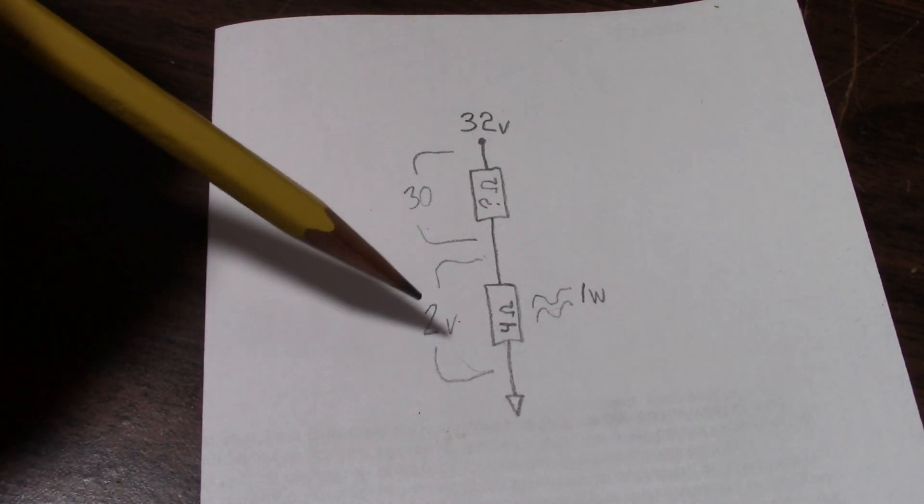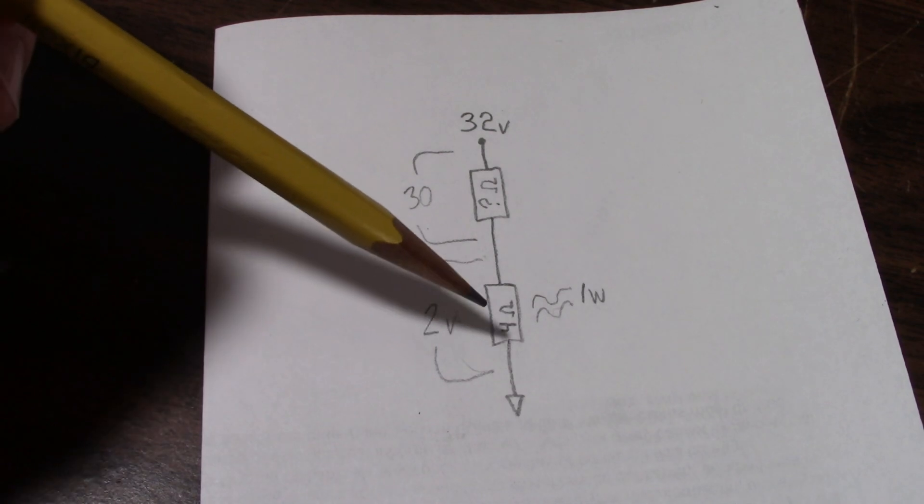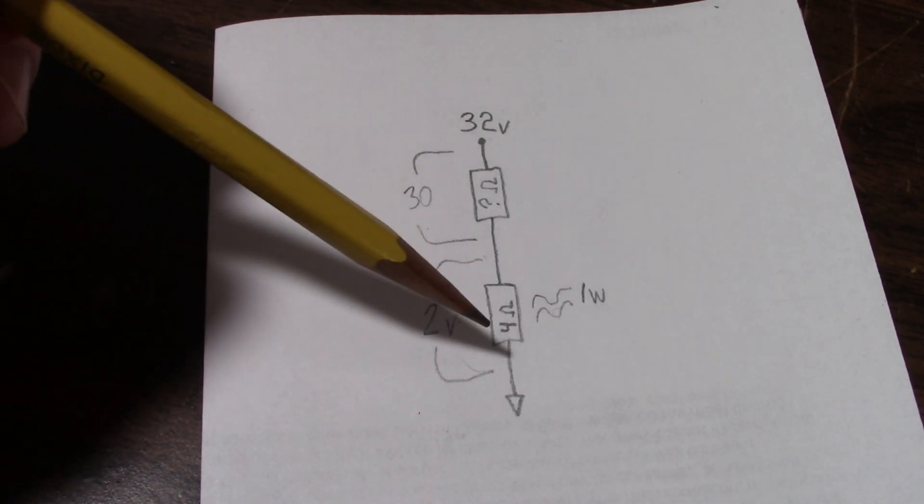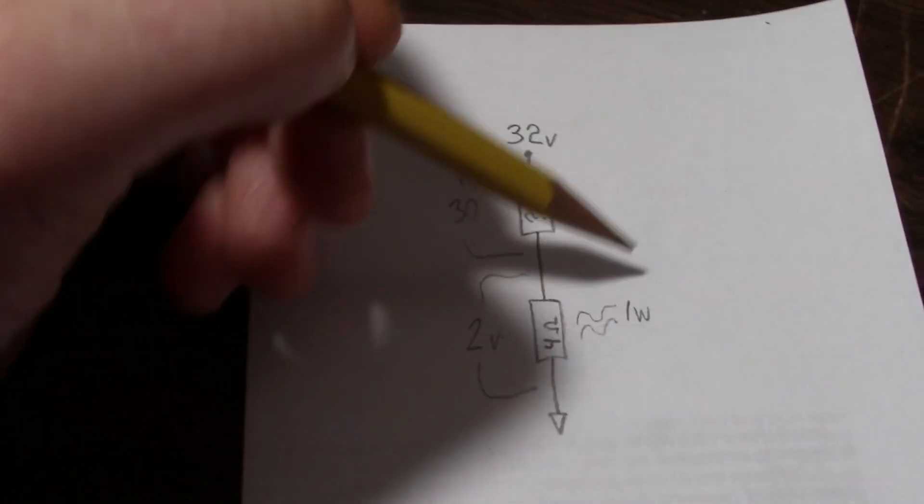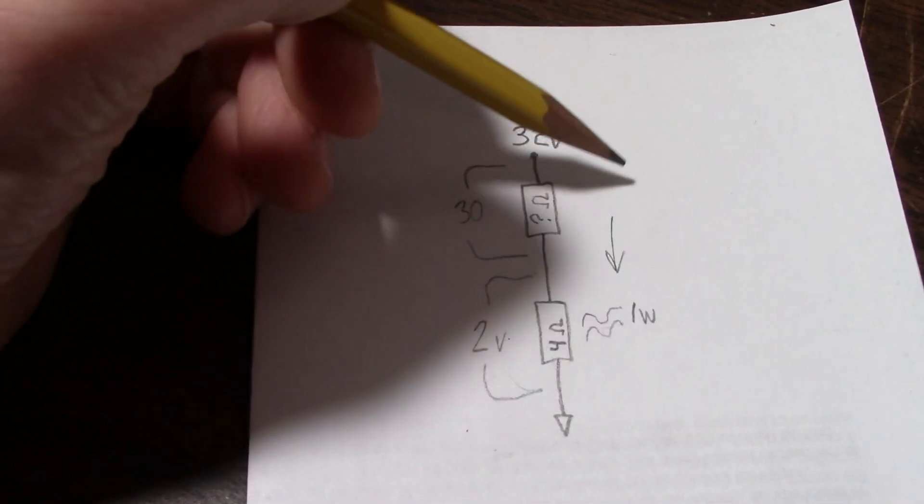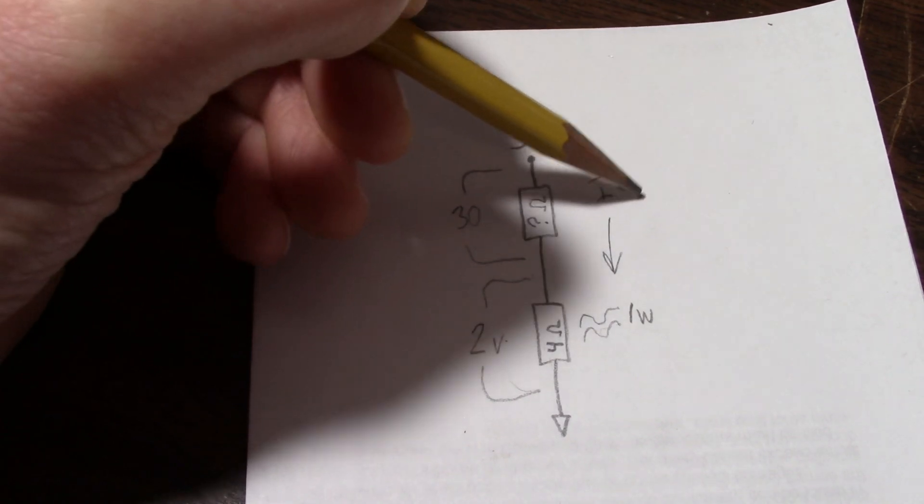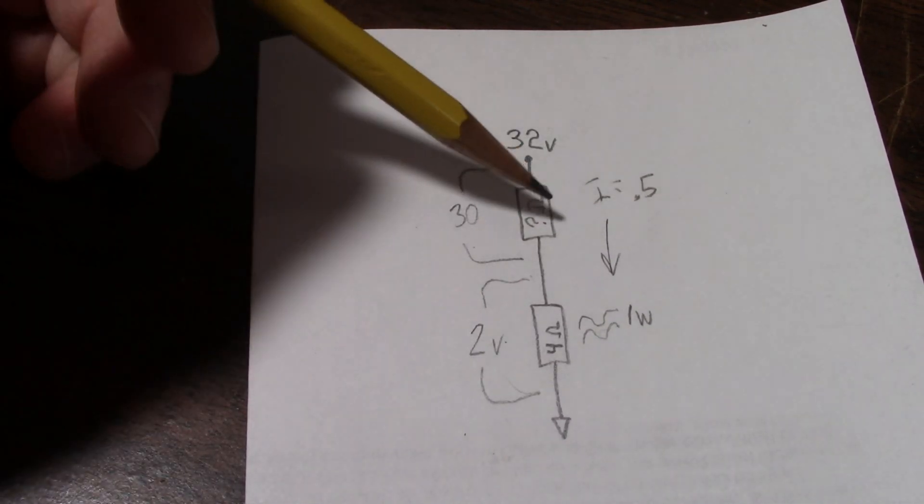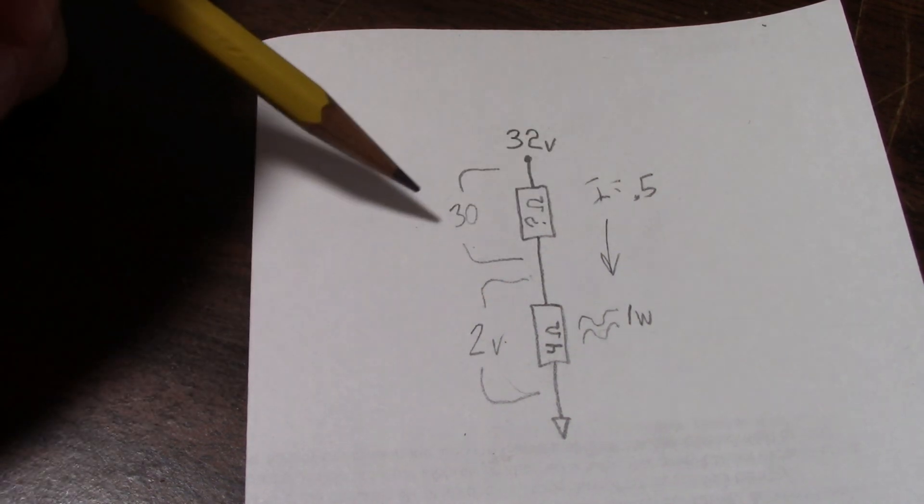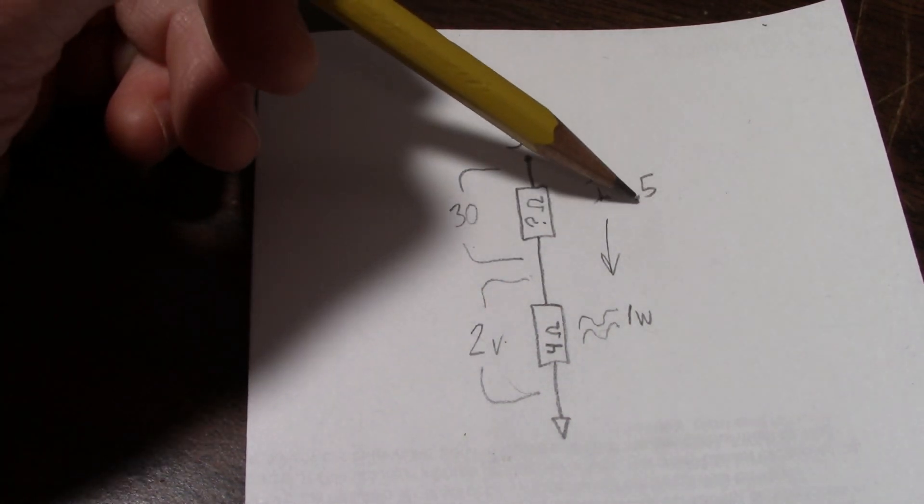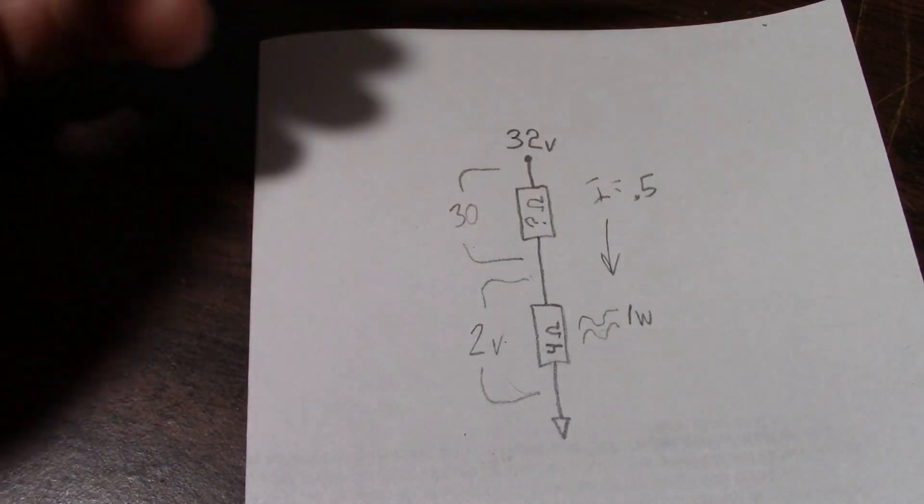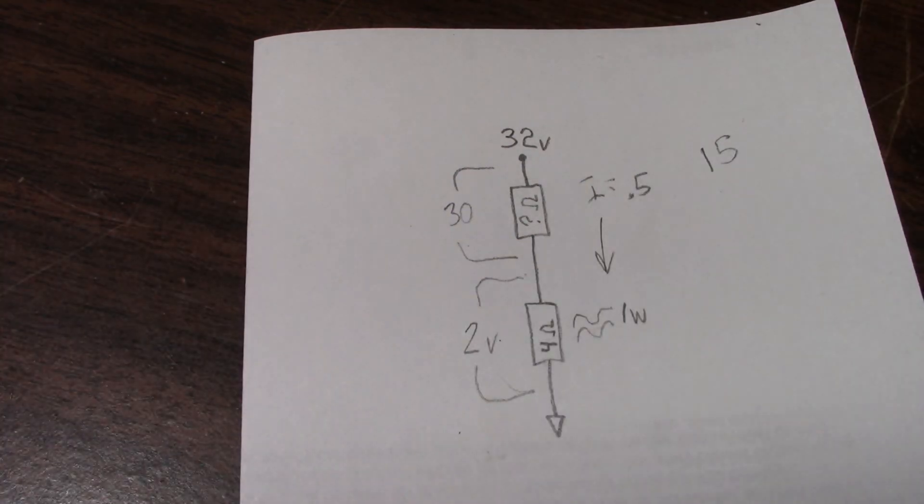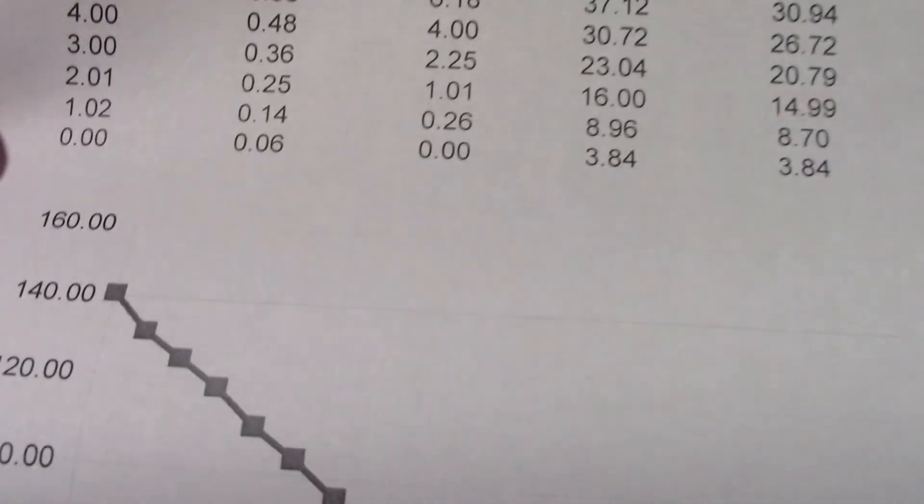So now I need to know the current in the circuit. Well that's also easy to do now that we have these numbers - 2 volts divided by 4 ohms is - bumped the camera - we have a current of half an amp. So now I can figure out the power loss in this resistor, it's simply 30 times 0.5 amps, 15 watts. Look at that.